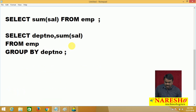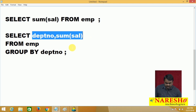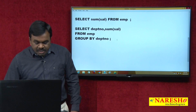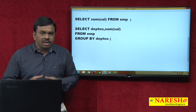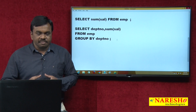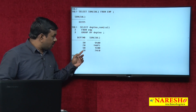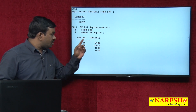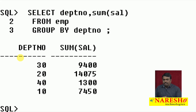My requirement is to calculate department-wise total salaries. The query SELECT SUM(SAL) FROM EMP returns total salary from the whole table. To calculate department-wise total salary, write: SELECT DEPTNO, SUM(SAL) FROM EMP GROUP BY DEPTNO. Grouping is based on department: department 10 becomes one group, 20 becomes one group, 30 becomes one group, 40 becomes one group. From each group it calculates the total salary. The output shows: department 10 = 74,50; department 30 = 9,400; department 20 = 14,000; department 40 = 1,300. But the output is not sorted.